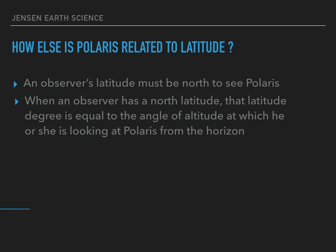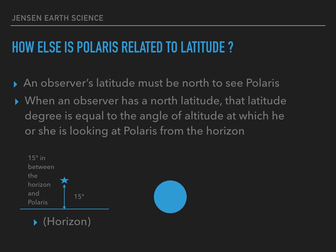So what does that look like? Here's our horizon, and here's our Polaris. Here's our space in between Polaris and the horizon — we'll say that's 15 degrees. So we have 15 degrees in between the horizon and Polaris. Now that I have the angle of Polaris from the horizon, I know where I am on Earth in terms of latitude. Here's Earth again, here is Polaris, here's our prime meridian, here's our equator which is zero degrees. Here is our 15 degrees North latitude line. Because my angle between the horizon and Polaris was 15 degrees, I know that this observer was standing at 15 degrees North.